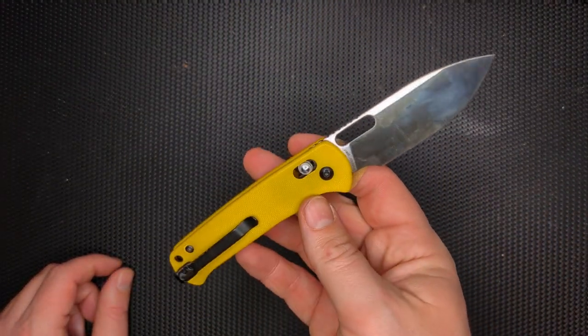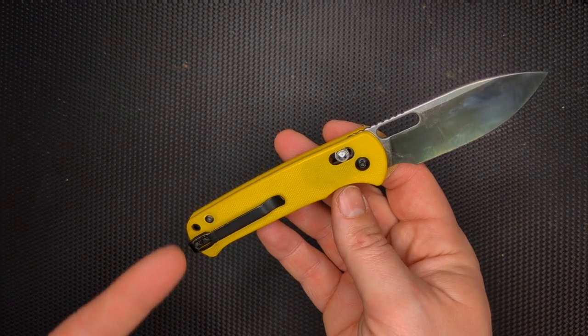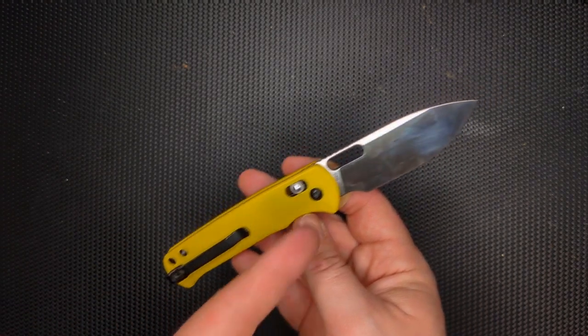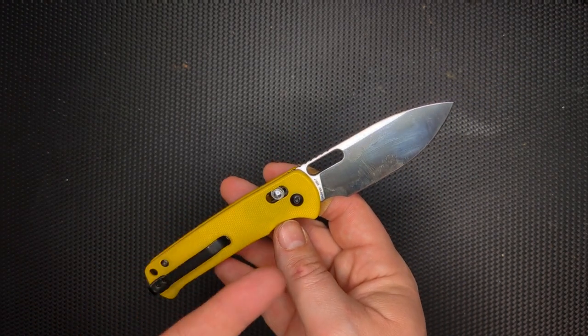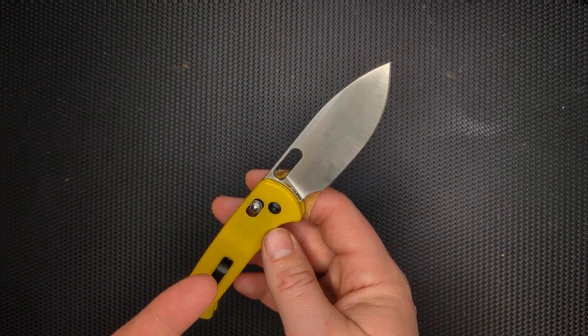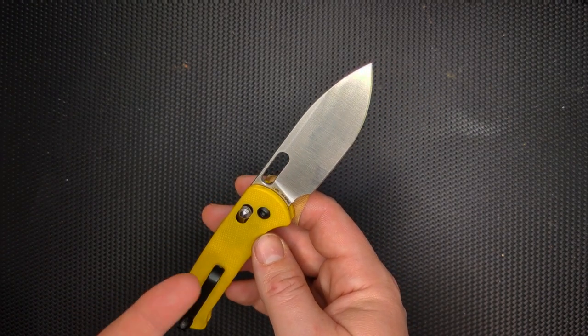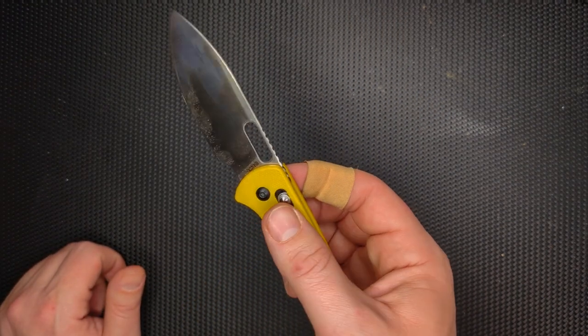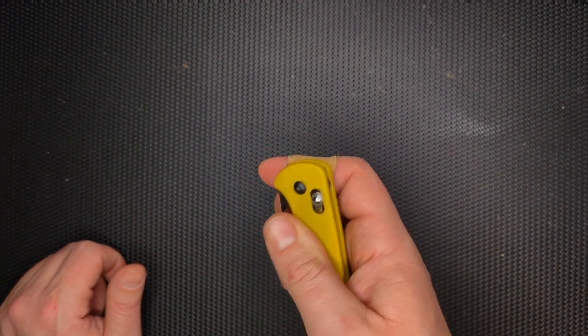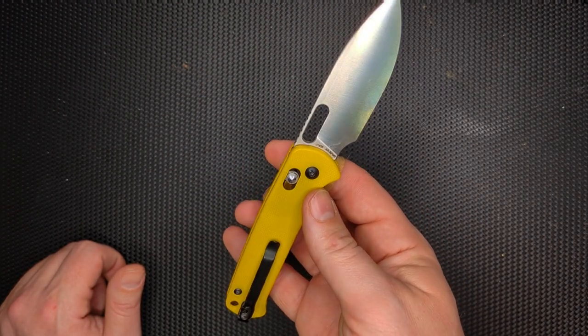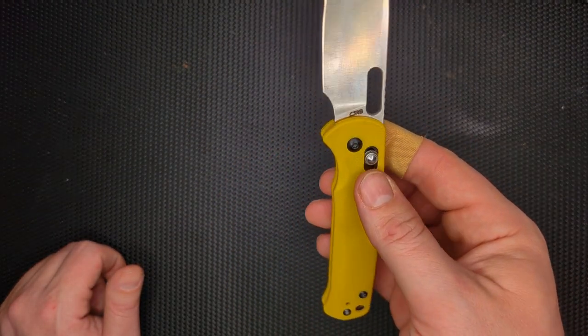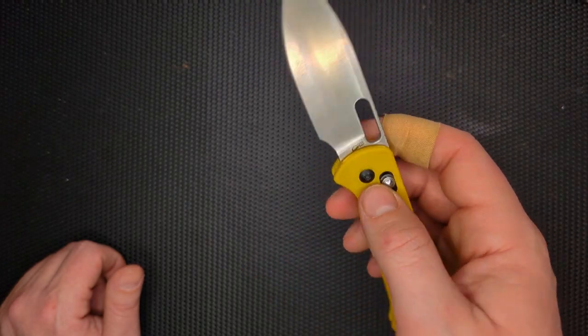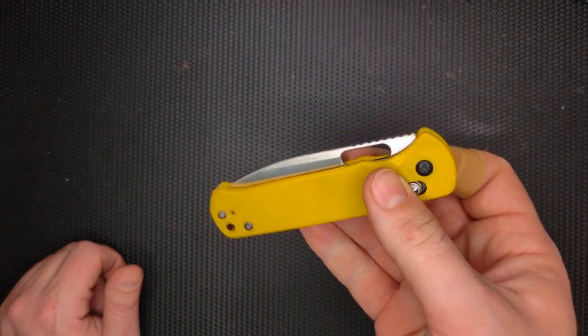Overall, I think that this has some shortcomings. Number one, different size hardware, which is excusable. The metal, wish it was 14C, but AR RPM 9, I've never had a problem with CJRB uses it almost exclusively for their budget knives and I found it to be absolutely fine. And the access to the hole is blocked by the ergonomics.